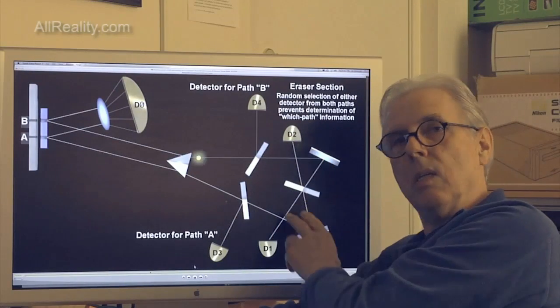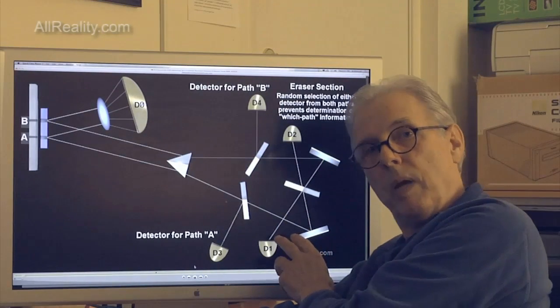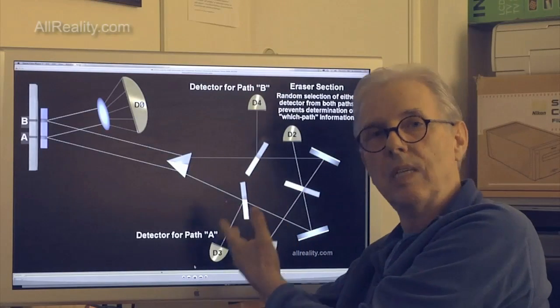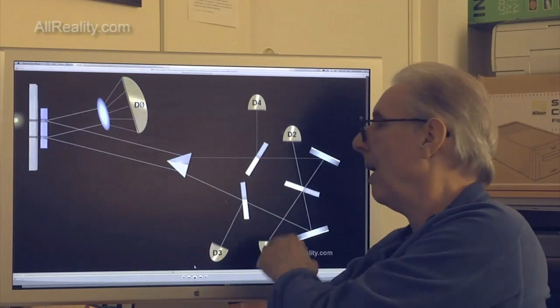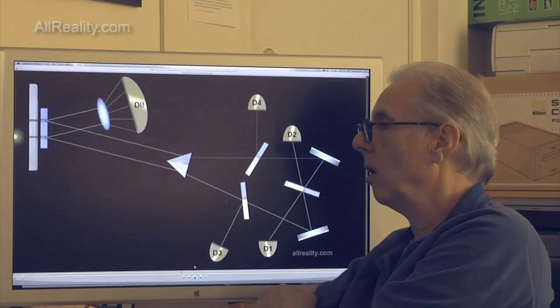So it's not erasing which path information, it's obfuscating it. It's not allowing you to know what the which path information was.